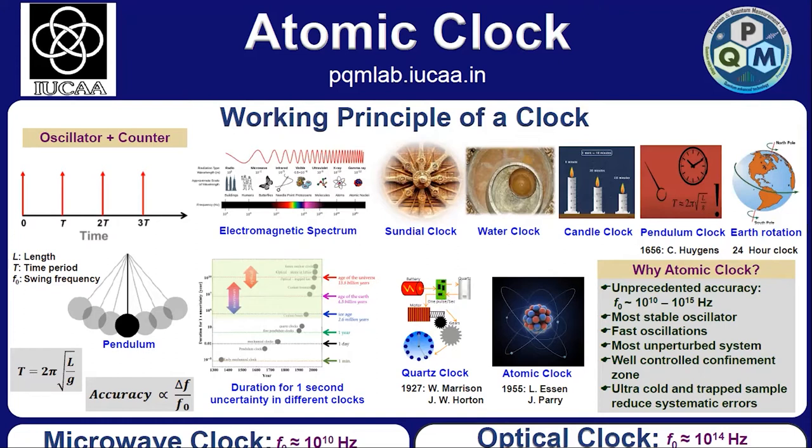That sounds quite interesting. Due to much faster oscillation of the order of 10 to the power of 10 to 10 to the power of 15 hertz, an atomic clock offers unprecedented accuracy as compared to earlier clocks. So over the years we get better and better clock with improved accuracy.